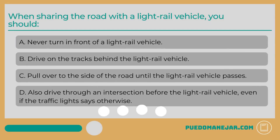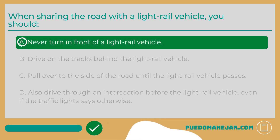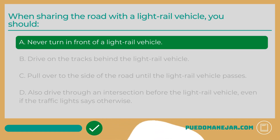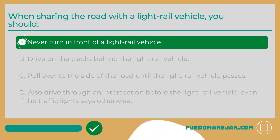When sharing the road with a light rail vehicle, you should: A. Never turn in front of a light rail vehicle. B. Drive on the tracks behind the light rail vehicle. C. Pull over to the side of the road until it passes. D. Drive through an intersection before the light rail vehicle, even if the traffic light says otherwise. The answer is A — never turn in front of a light rail vehicle. Light rail vehicles are passenger trains and trolleys operating in metropolitan areas whose rails often intersect and share parts of the road with traffic lanes.